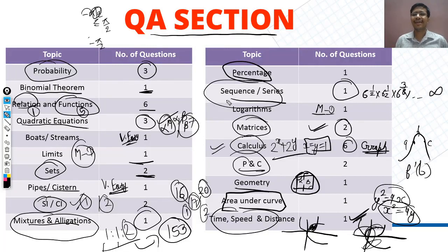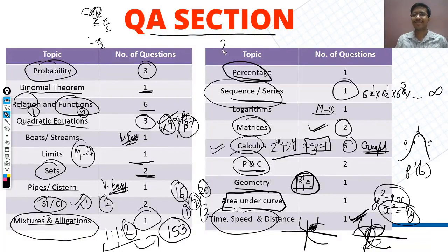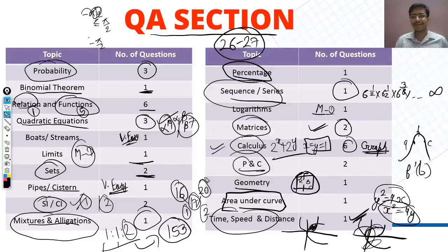So those were all the QA section questions. I would say the ideal attempt for this section is 26 to 27 questions out of 37. That was the general ideal attempt for QA.